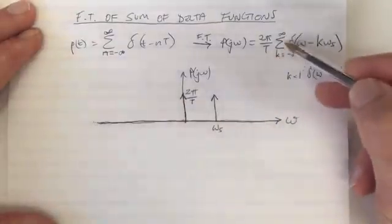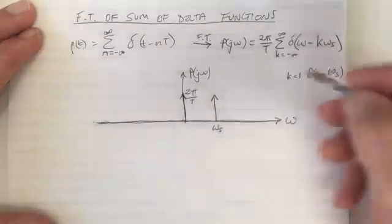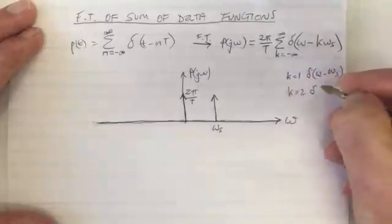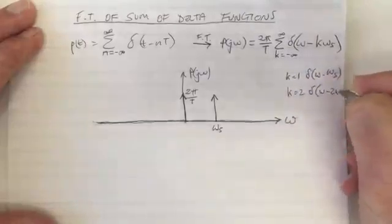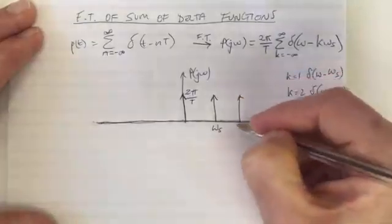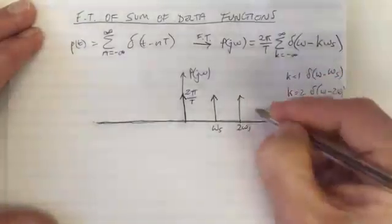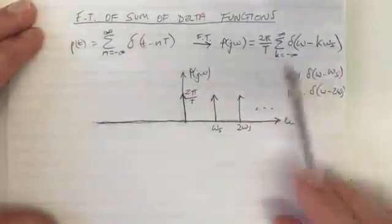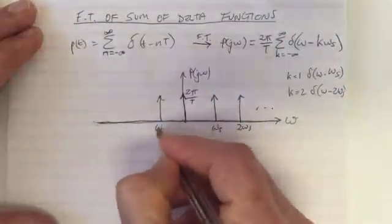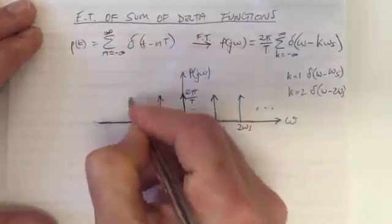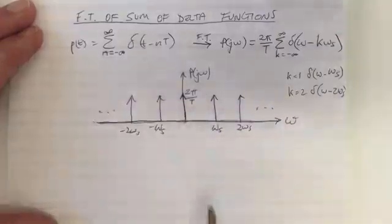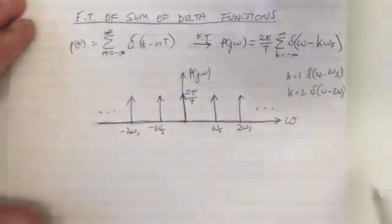Well, of course it's the same for k equals two, three, four, and so on. You're going to have delta functions, so k equals two is a delta function at ω - 2ω_s, and that is a delta function here at 2ω_s and so on. And of course the same for negative values of k, so negative ω_s and negative 2ω_s and so on. And this is what the function looks like.